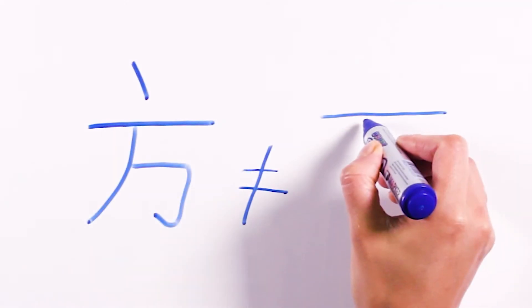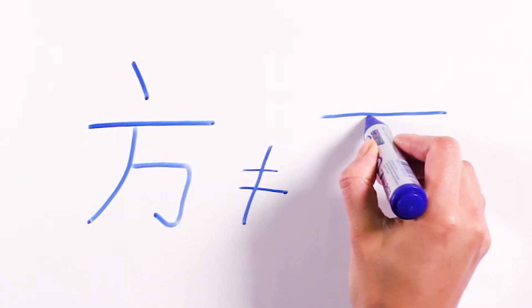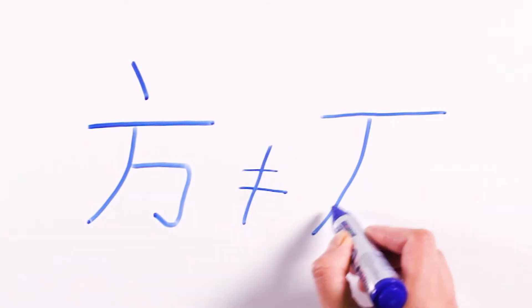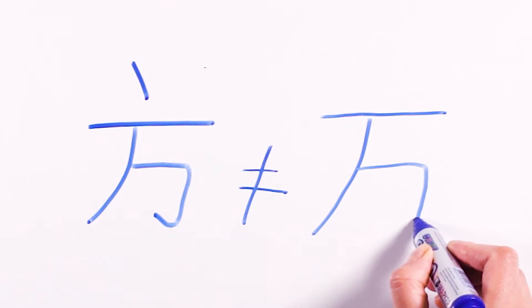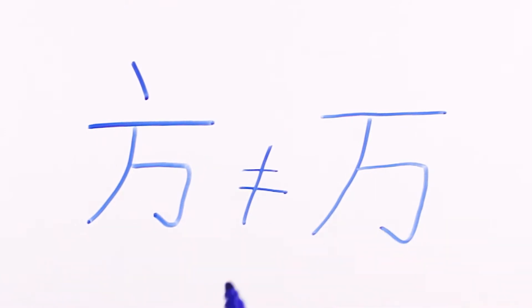You can confuse it with the character for 10,000, and the difference between them is that there is no dot.